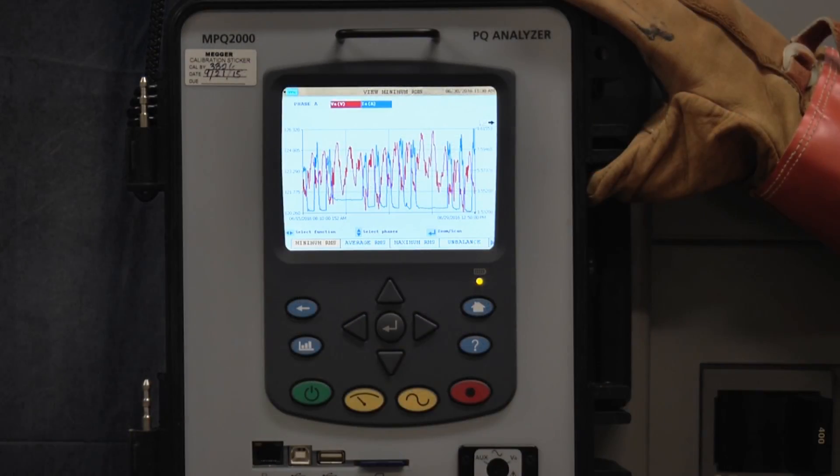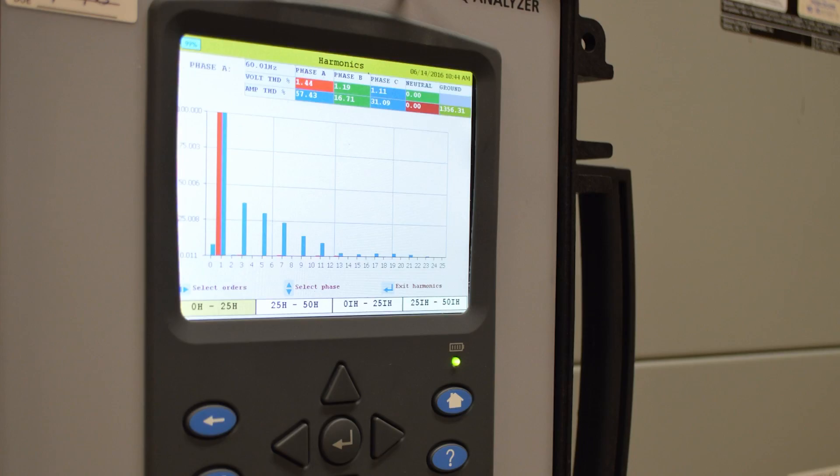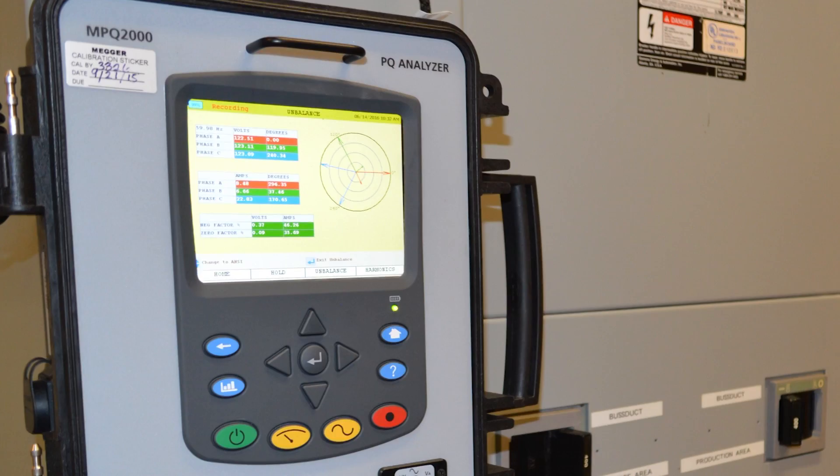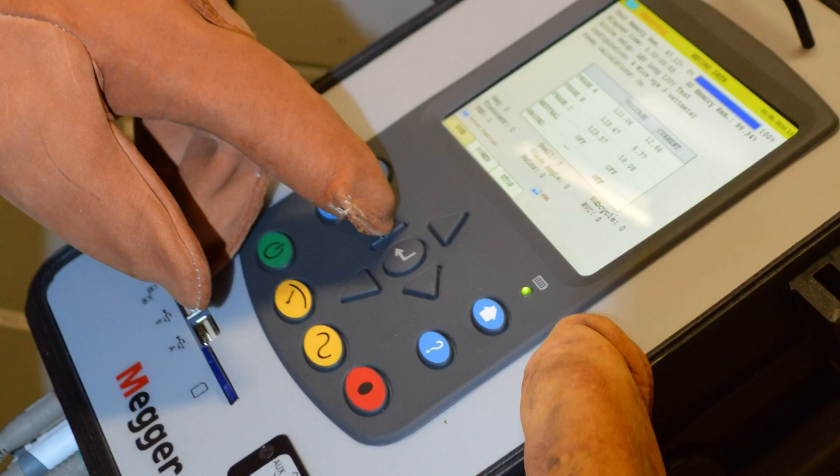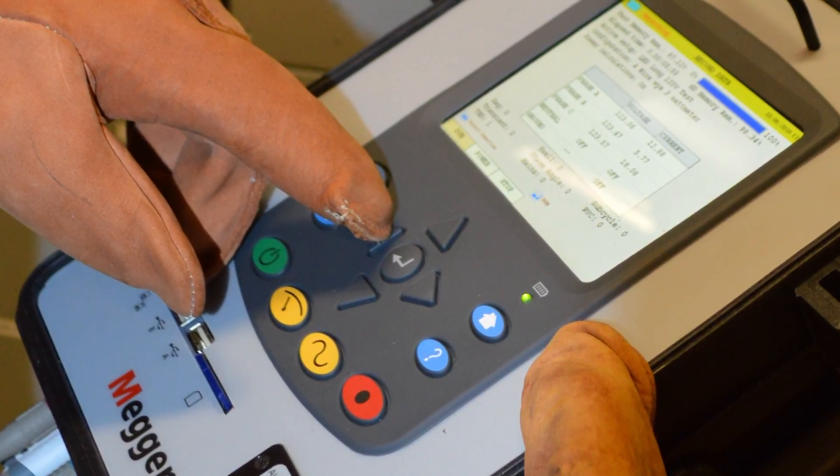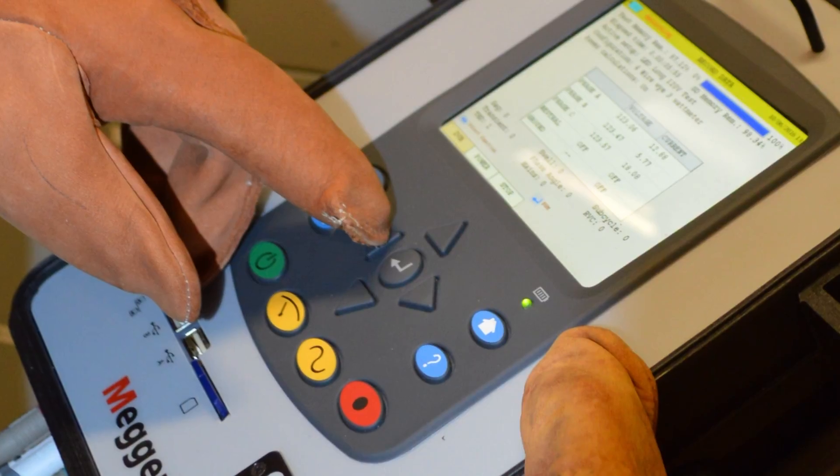You can view real-time waveforms, vectors, and harmonics on the high-definition color display. The MPQ-2000 is a smart analyzer that makes power quality simple.